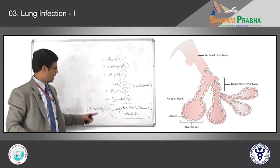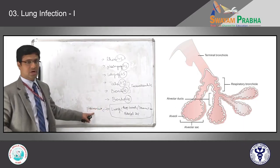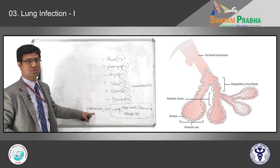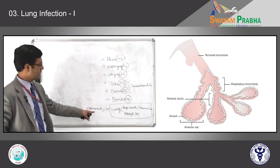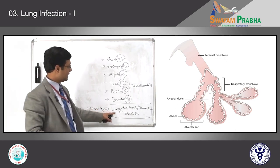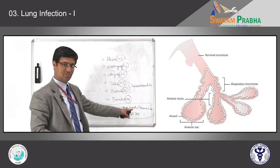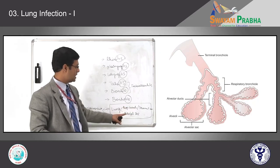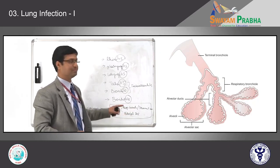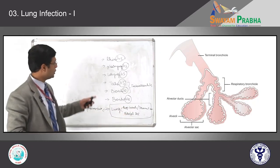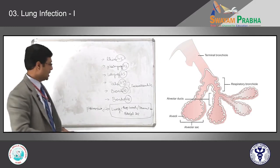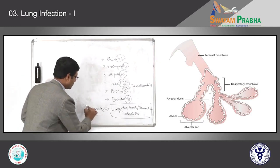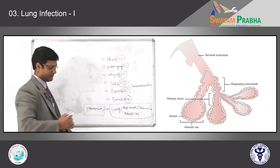Pneumonia is nothing but inflammation of the lung parenchyma, predominantly limited to the respiratory bronchioles, terminal bronchioles, and alveolar sac. In today's lecture, we will be talking about pneumonia.